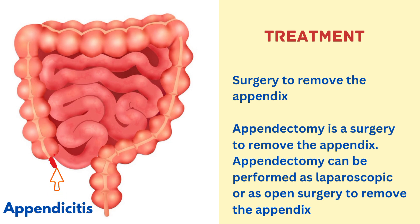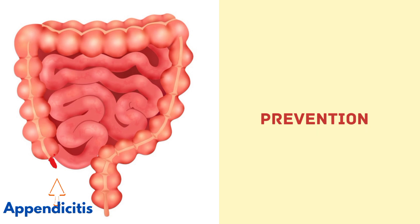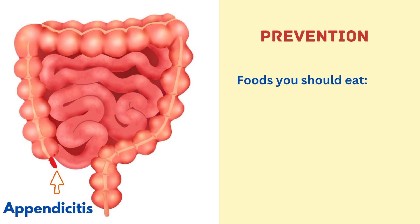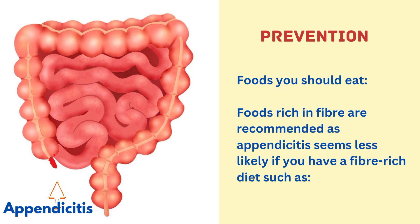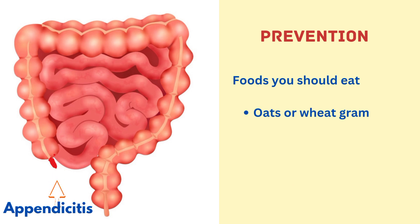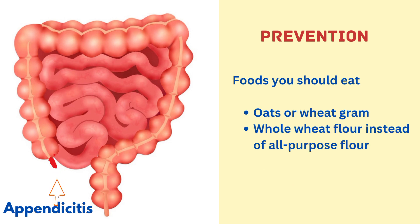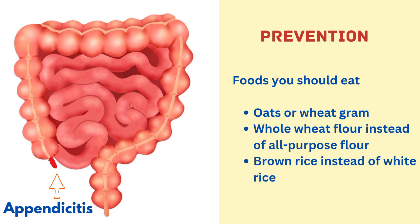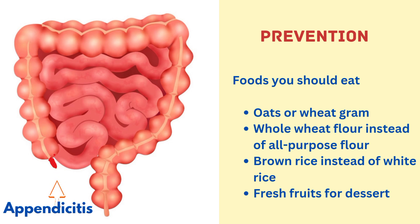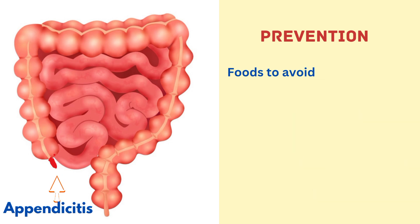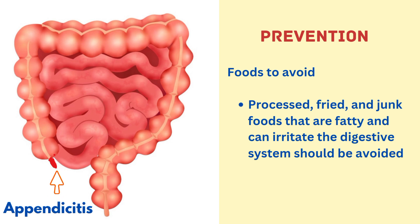For prevention, foods rich in fiber are recommended, as appendicitis seems less likely with a fiber-rich diet. These include oats, whole wheat flour instead of all-purpose flour, brown rice instead of white rice, and fresh fruits for dessert.